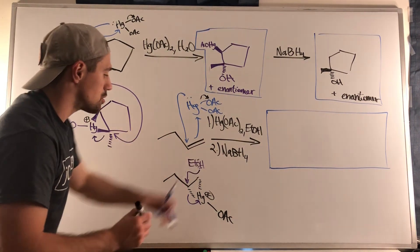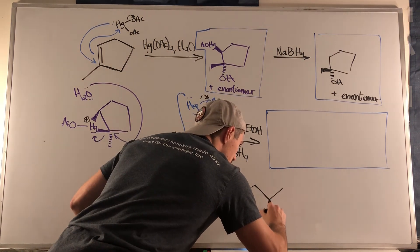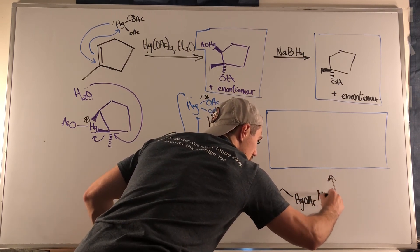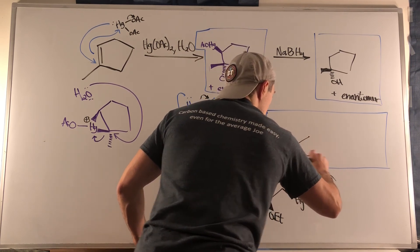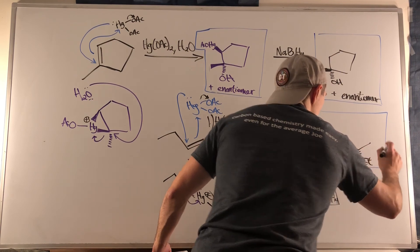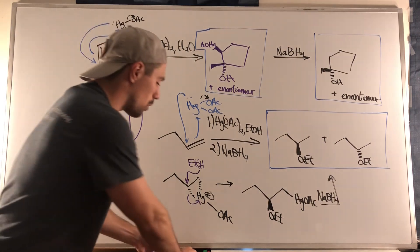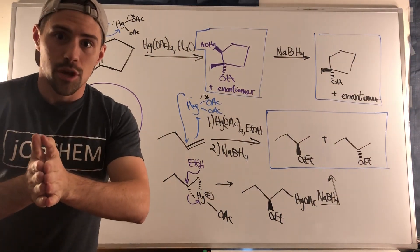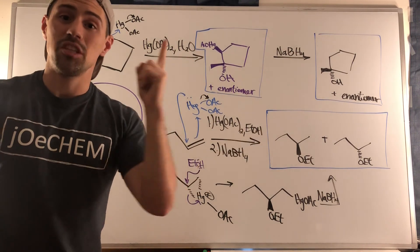Since the cyclic intermediate was formed with dashes, ethanol attacks from the back side, which is a wedge, giving an ethoxy group on a wedge. After NaBH4 comes in to swap out the HgOAc for hydrogen, we have our product. Because the cyclic intermediate can form with two dashes or two wedges, I'll show the full product mixture rather than just writing 'plus enantiomer.' Thanks for watching — if you were looking for a deeper dive on oxymercuration-demercuration, I hope this was it. Leave a comment, like, and subscribe!